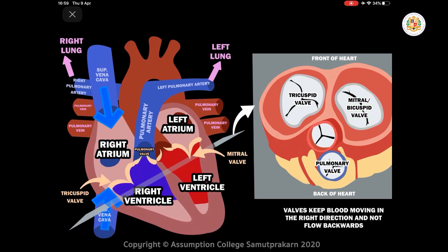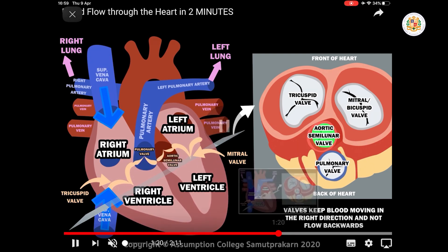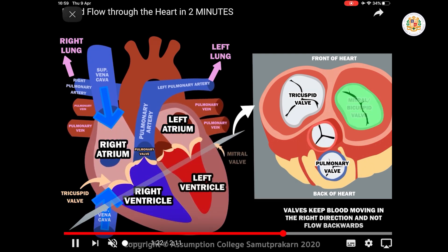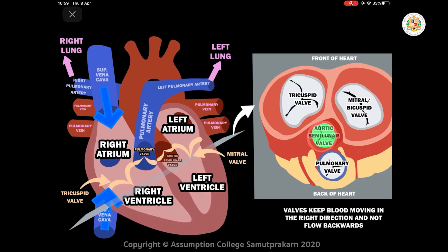Oxygenated blood returns from the pulmonary veins to the left atrium and moves through the left ventricle. After that, the left ventricle contracts and pumps blood out through the main large artery named the aorta.